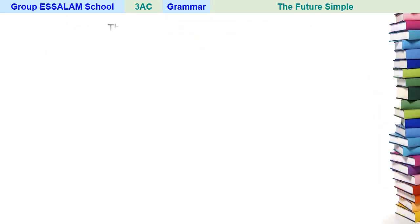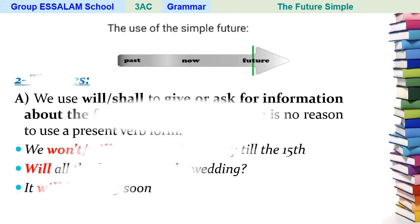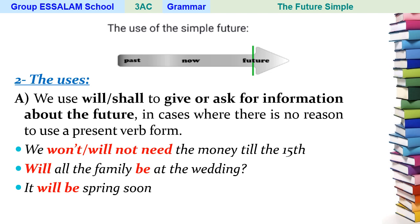Now let's move on to the uses of the simple future. Look at this timeline — this is the future tense. We are here in the present now. All the actions we discuss are in the future. Let's see when we use this tense.